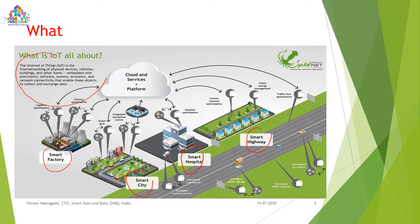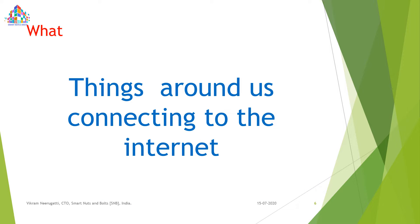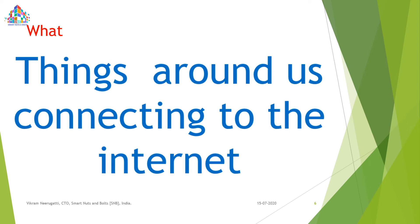Here we have a definition: Internet of Things is the internetworking of physical devices, vehicles, buildings, and other items embedded with electronics, software, sensors, actuators, and network connectivity that enables these objects to collect and exchange data. In simple terms: things around us connecting to the internet is called the Internet of Things.